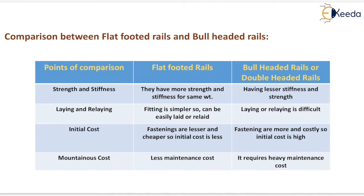For initial cost: in case of flat footed rail, fastenings are fewer and cheaper, so initial cost is less. But in bull headed or double headed rails, fastenings are more and costly, so initial cost is high.